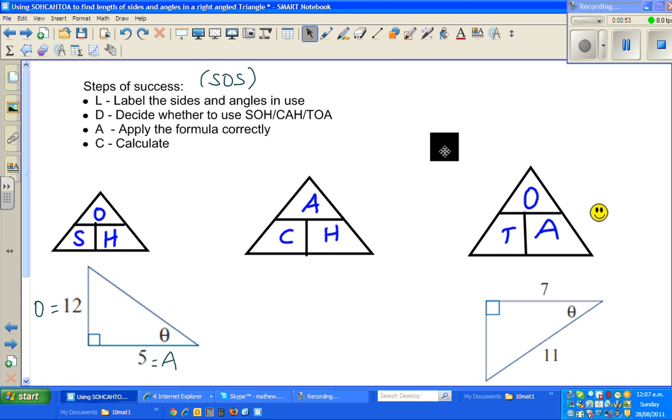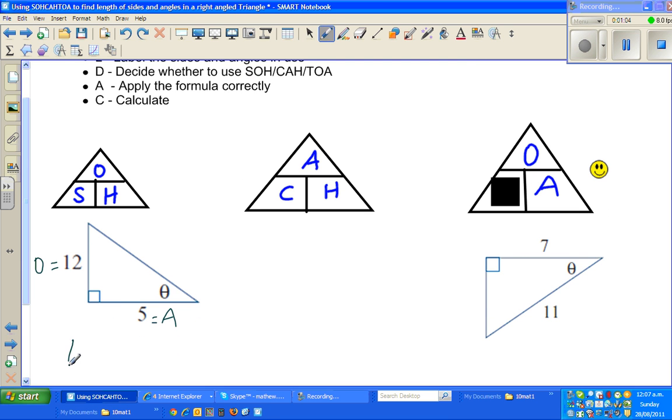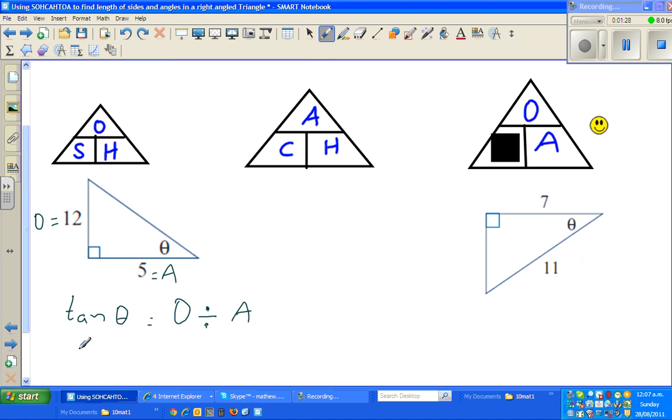So now I will write. T stands for tan. Theta is O divided by A. O is sitting on top of A, so it will start with O. Don't write A divided by O. That will give you the wrong answer. So O divided by A. As I discussed in the last video, you get theta by getting the tan inverse of both sides. So you get tan inverse of O. What is O? 12 divided by 5.